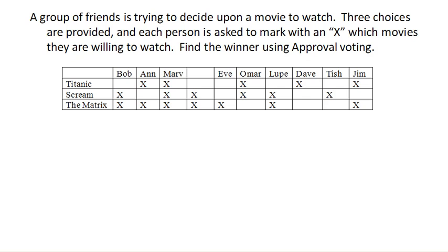For example, a group of friends trying to decide which movie to watch. Ann is saying she's okay with watching Titanic or The Matrix — either one's fine. And Marv doesn't care; he's willing to watch anything. Eve really only wants to watch The Matrix and doesn't want to watch any of the others. Approval voting is very simple because we just total up how many approvals each choice gets.